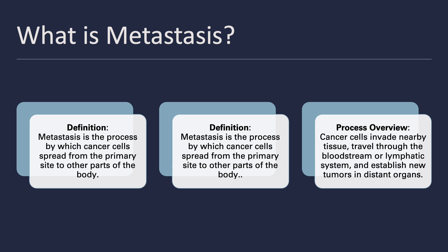Metastasis is a term that refers to the spread of cancer cells from their original site to other parts of the body. This process involves cancer cells breaking away from the primary tumor, invading nearby tissue, and traveling through the bloodstream or lymphatic system. These cells then establish new tumors in distant organs. Understanding this process is crucial because metastasis marks a more advanced and often more dangerous stage of cancer, making it harder to treat effectively.